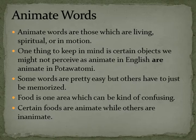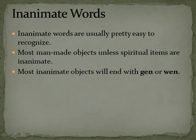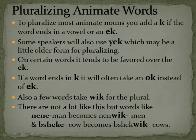Food is one area which can be kind of confusing — certain foods are animate while others are inanimate. Inanimate words are usually pretty easy to recognize. Most man-made objects, unless spiritual, are inanimate. Most inanimate objects will end with -gun or -wen.